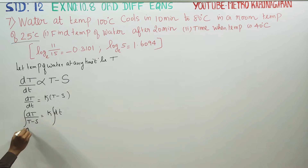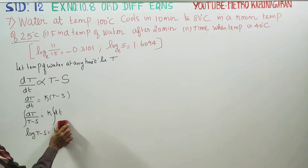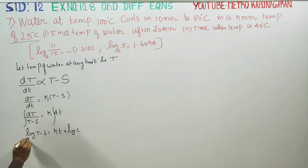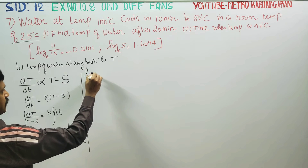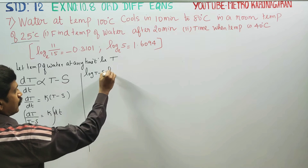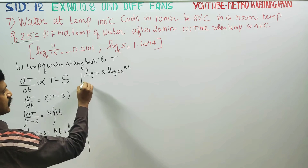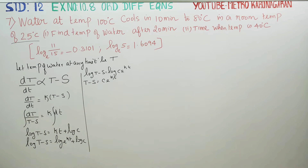Integrating on both sides: the left side gives logarithm of (T minus S), and the right side gives k into t plus log C. This can be written as logarithm of e^(kt) plus log C, which simplifies to log of C·e^(kt). Taking antilog, T minus S is equal to C·e^(kt). This is our general solution for this differential equation.